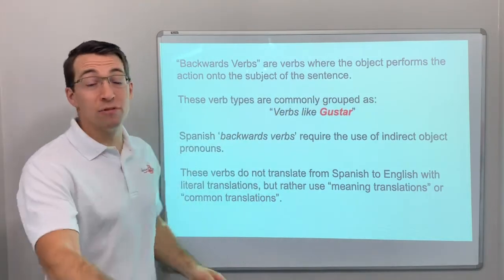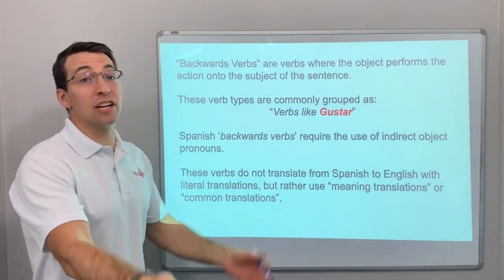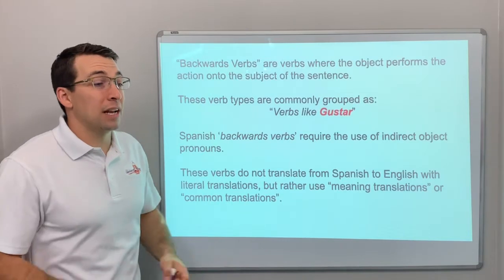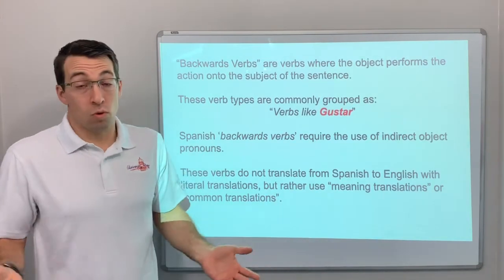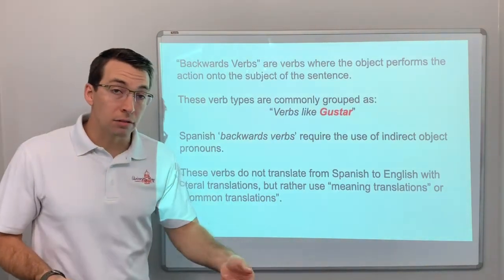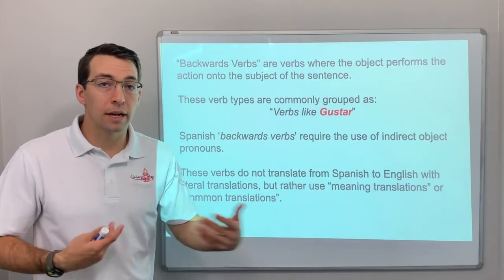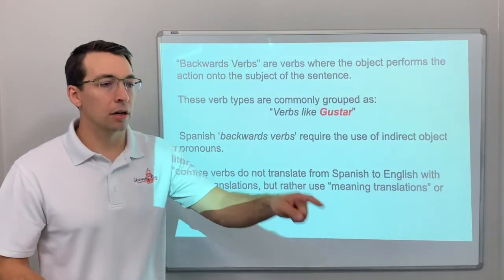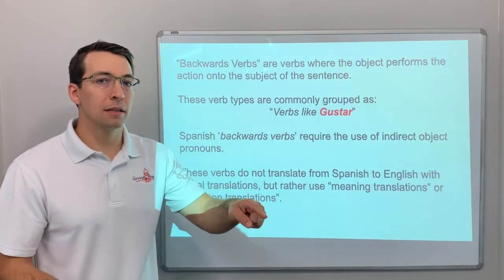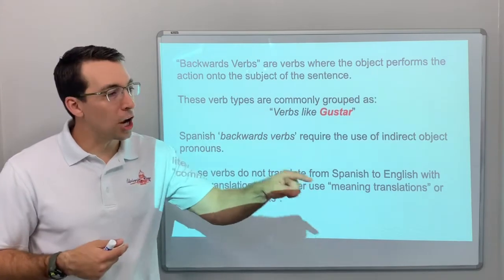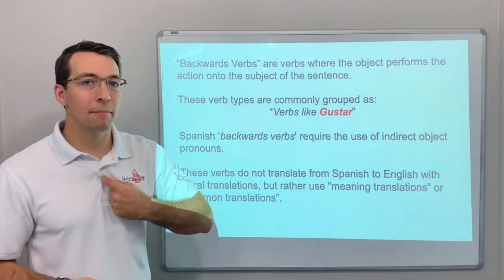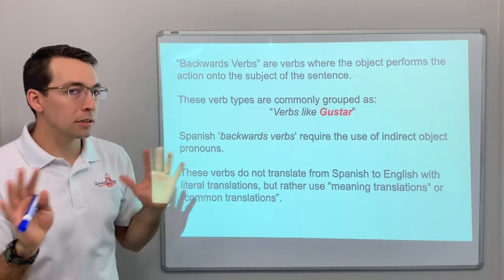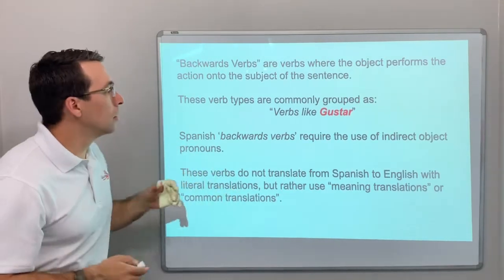Backwards verbs are verbs where the object does the action to the subject. In English we say 'I like soccer' — soccer is what I like. In Spanish it translates as 'soccer is pleasing to me.' Soccer is the one pleasing me; it's doing the action to me, the subject. So it's backwards. It's a little weird.